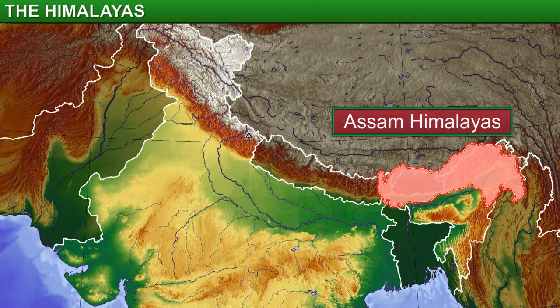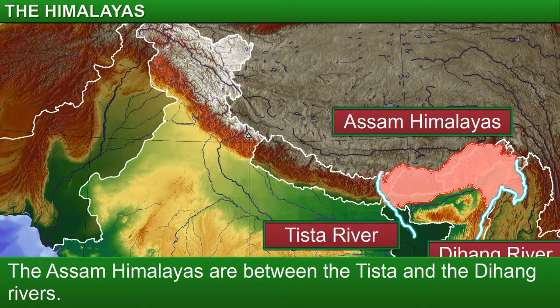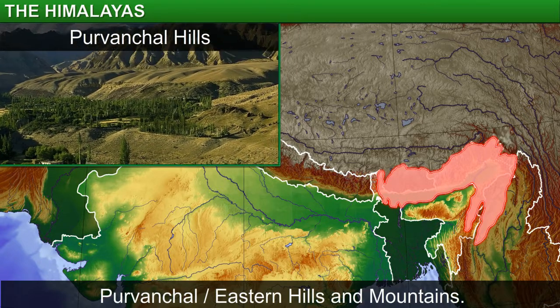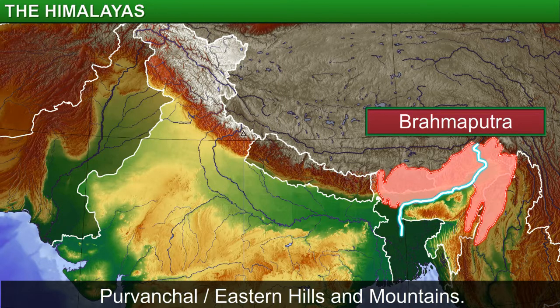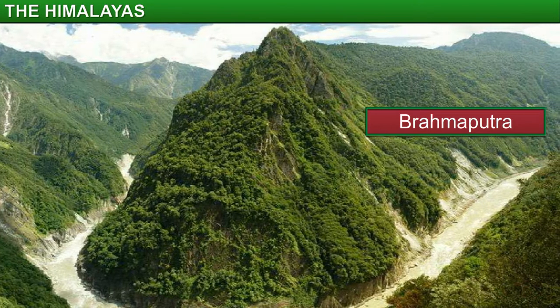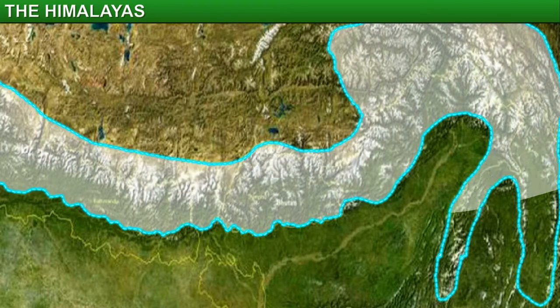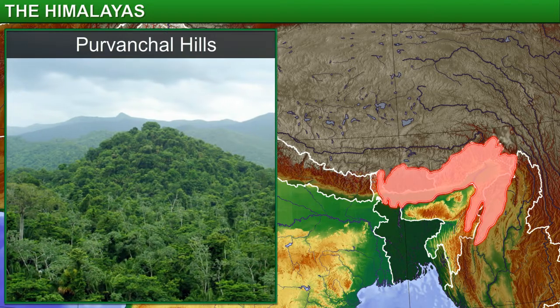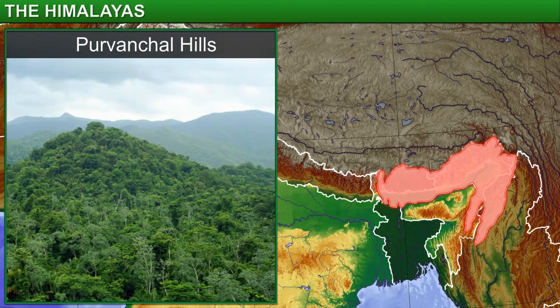The Assam Himalayas refer to the region between the Tista and the Dihang rivers. As we move east, we come to the division of the Himalayas called the Purvanchal, or the eastern hills and mountains. The Brahmaputra forms the easternmost boundary of the Purvanchal region. The Brahmaputra breaks through the Himalayas to form some deep valleys or gorges, one such valley being the Dihang Gorge in Arunachal Pradesh. Beyond the Dihang Gorge, the Purvanchal hills dip sharply southwards and stretch out along the eastern borders of India, extending through the north-eastern states.